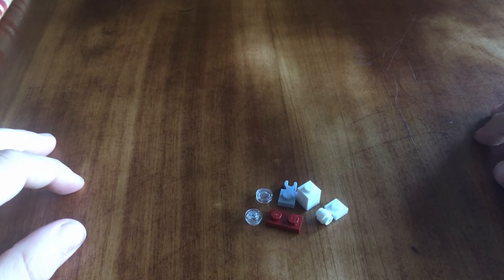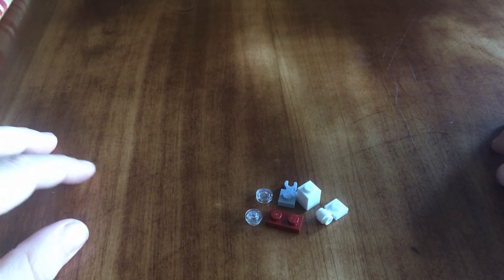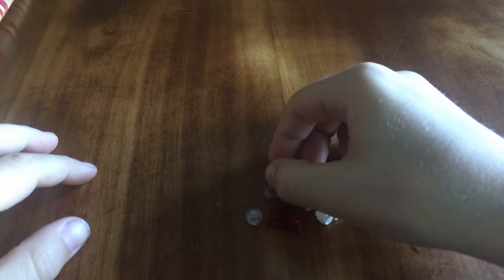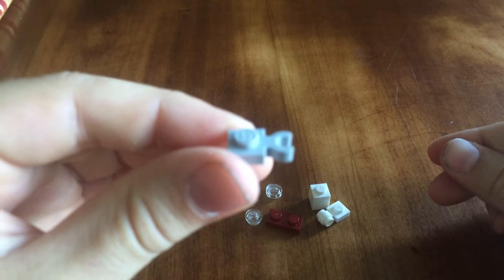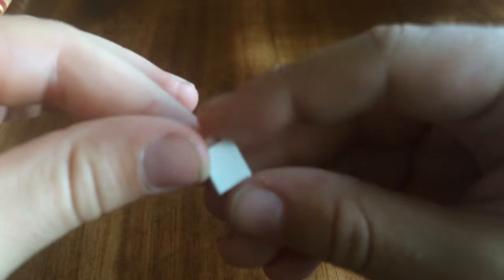Today we're going to be building a LEGO duck. Here's all the parts that you'll need. First, you'll need a 1x1 with a little hook. Then you'll need a 1x1 block.